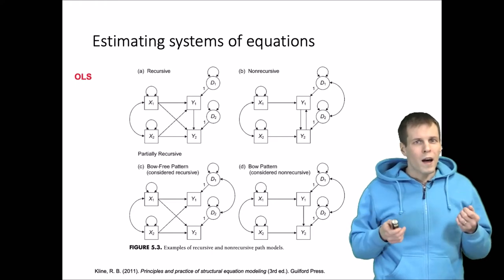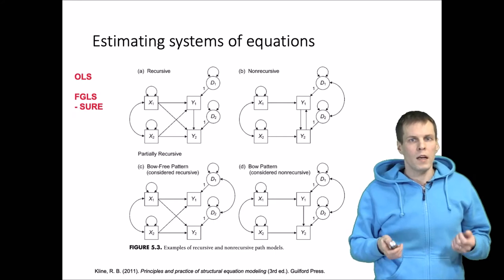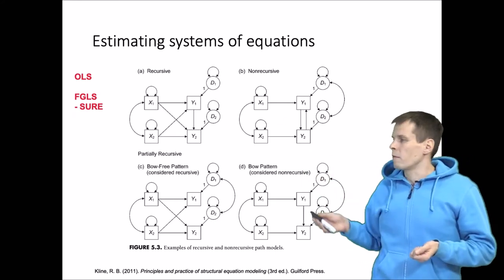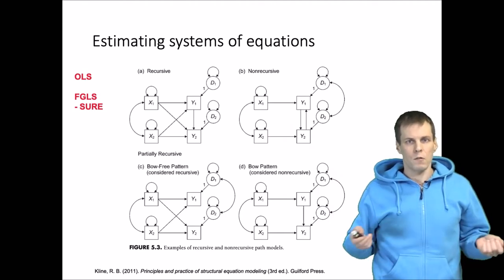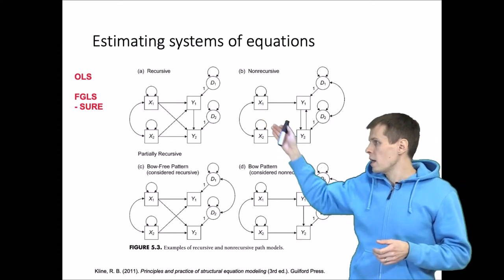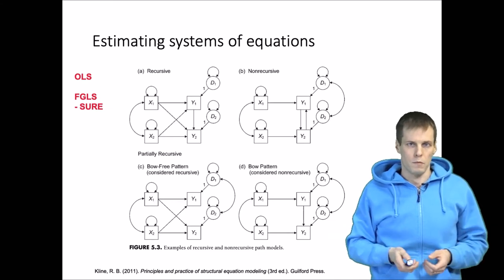If we want a small improvement over OLS, we can go for seemingly unrelated regression estimation, which belongs to the family of feasible generalized least squares estimators. That too can be used for estimating model A and model B consistently. It's slightly more efficient than OLS and makes a bit more assumptions.